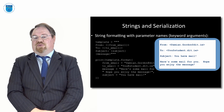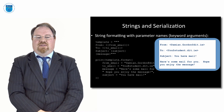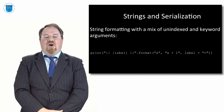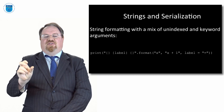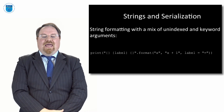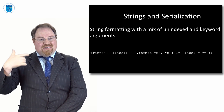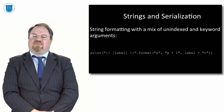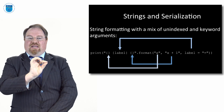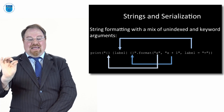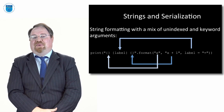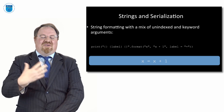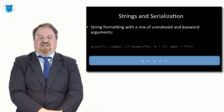We can even mix unindexed and keyword arguments. For example: '{} {label} {}' formatted with x, x+1, and label='=' will print 'x = x+1' — x goes into the first unindexed slot, x+1 into the second, and the label name goes in between. Note you can mix unindexed and keyword arguments, but you cannot mix indexed and unindexed, as that confuses the system.